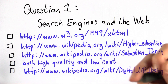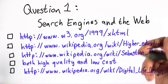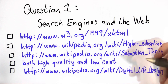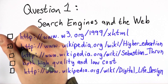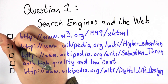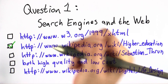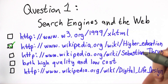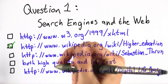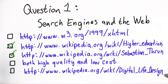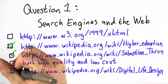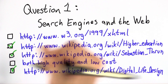On this webpage, there are three clickable hyperlinks. The first URL links to higher education. The second URL links to Sebastian's Wikipedia page. And the last one is the Digital Life Design Conference Wikipedia page.